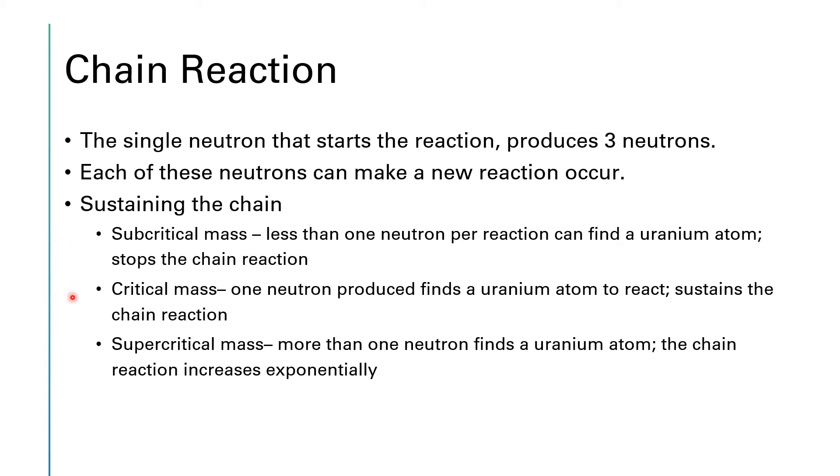At a critical mass, every time one uranium atom reacts, one neutron finds one uranium and we simply sustain the chain reaction. But we can have what's called a supercritical mass where more than one neutron will find a uranium atom and that causes this chain reaction to increase exponentially. A supercritical mass is what happens in a nuclear bomb.